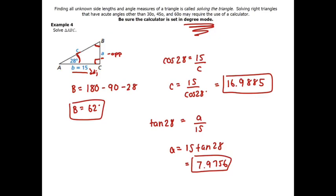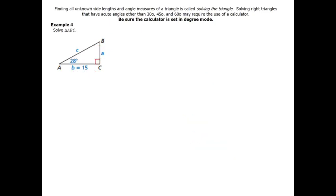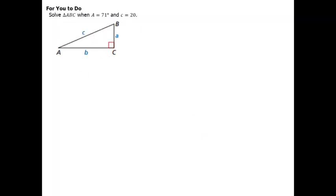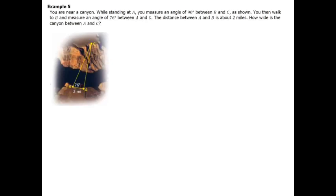We could also have used the Pythagorean theorem to find side a once we had b and c. We've now got all three side lengths and all three angles — the triangle is solved. Check your answers for the practice problems on the answer key posted online.